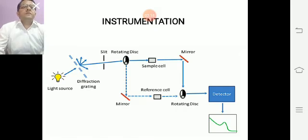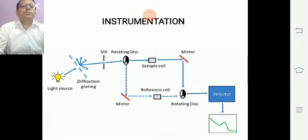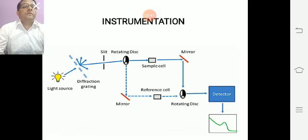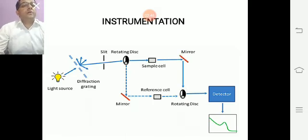Here is the instrumentation. We use a light source — different light sources for different purposes — and here is the diffraction grating. We also use a slit for selecting a particular wavelength, and here is the sample cell or reference cell, and here is the detector, which detects transmitted light and plots it in a plotter.